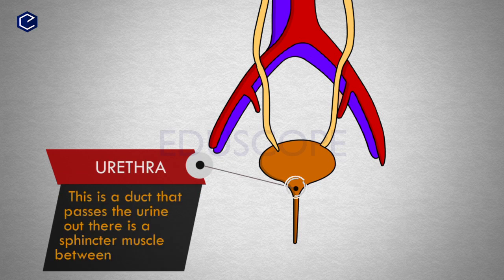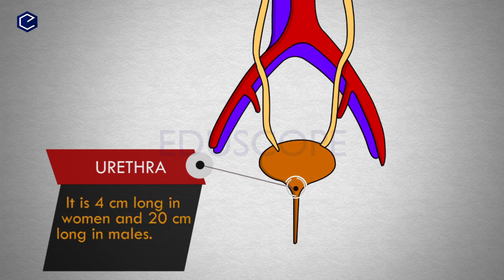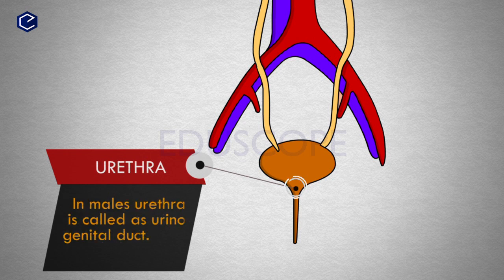The urethra is a duct that passes the urine out. There is a sphincter muscle between the urinary bladder and the urethra that controls the outflow of urine. It is 4 centimeters long in women and 20 centimeters long in males. In males, the urethra is also called the urinogenital duct.